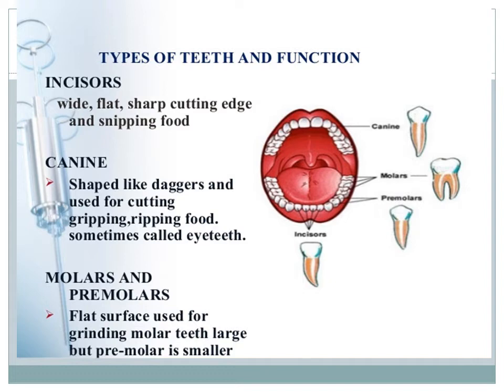The wisdom teeth are so called because they appear last, at an age of about 17 to 20 years, when the human body is reaching maturity. In mammals there are two sets of teeth: the milk teeth, also called deciduous or temporary teeth, and the permanent teeth. The milk teeth erupt when the child is about 7 to 8 months old and are shed after some time, replaced by the permanent teeth.